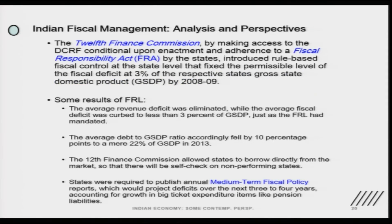What is called the Fiscal Responsibility Act, or FRA, by the states has a rule-based target. The target given to the states was that the fiscal deficit should be 3 percent of the GSDP. At the country level you have GDP; at the state level you have the gross state domestic product. This target was given to the states, and the fiscal responsibility act gave a target of 3 percent.